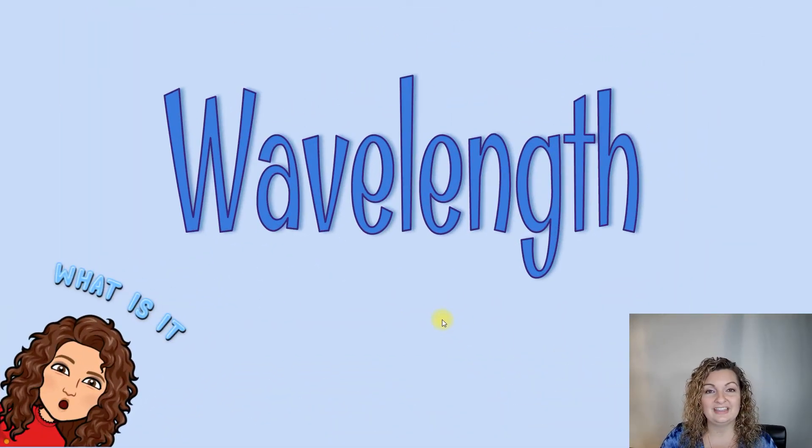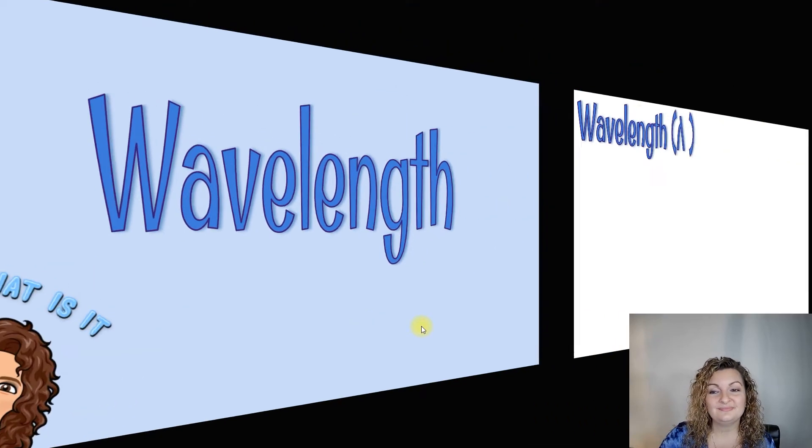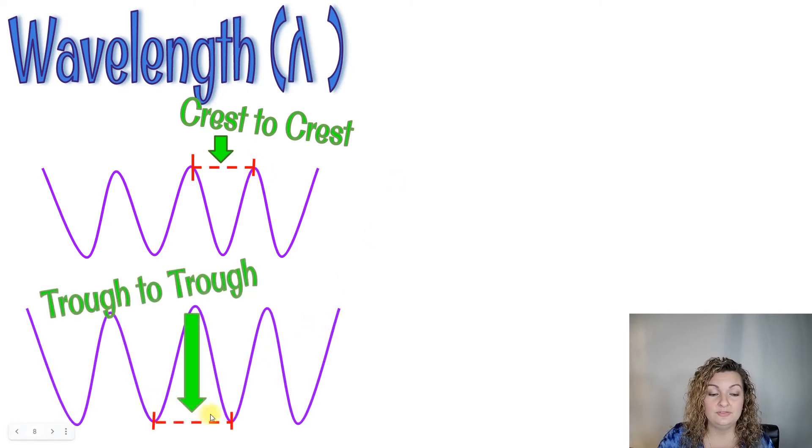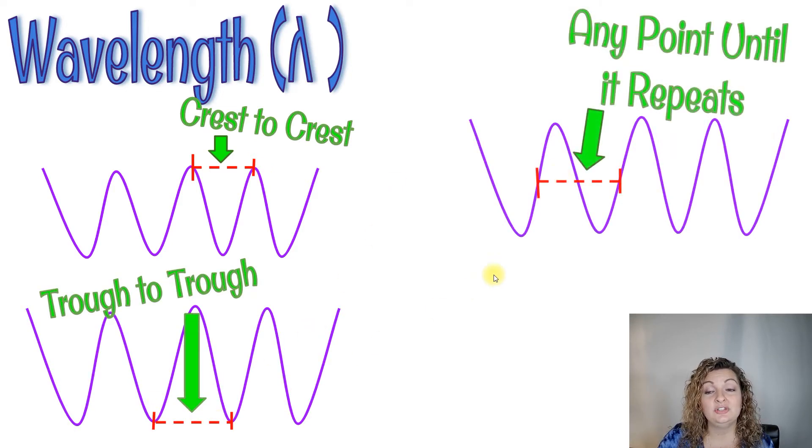So wavelength. How do we measure it? So you can do this in several different ways. The classic way is to go from crest to crest but you can also use trough to trough or you can do any point on the wave until it repeats again on that wave train.